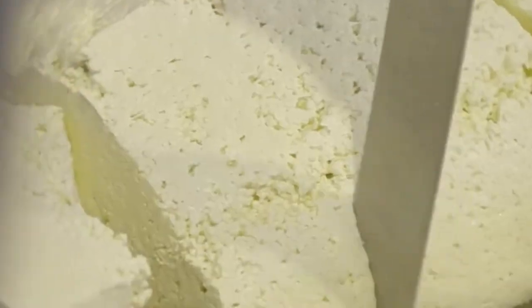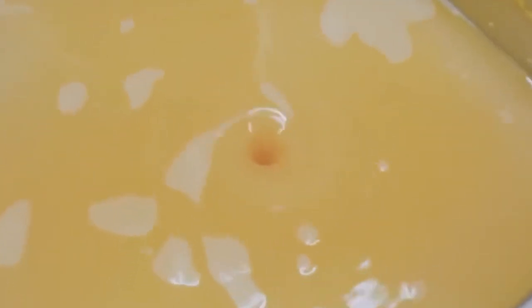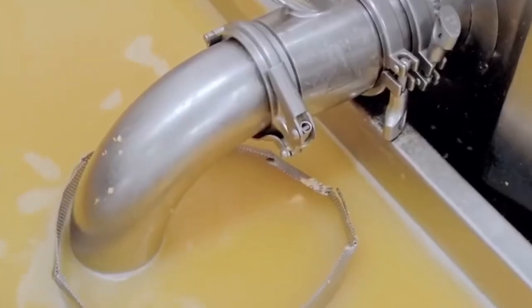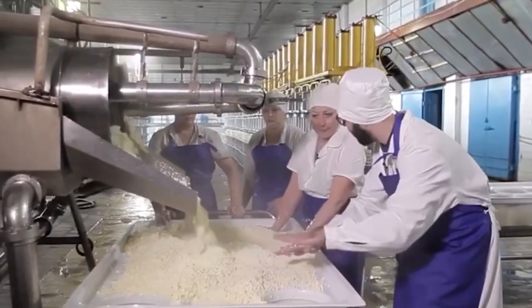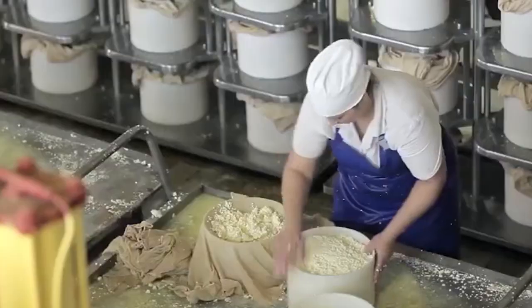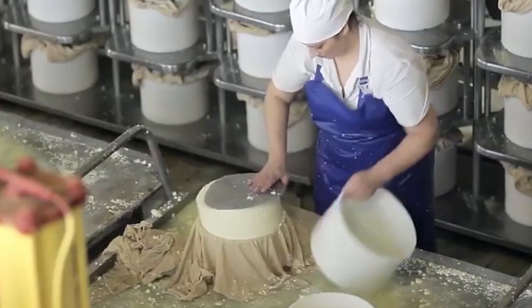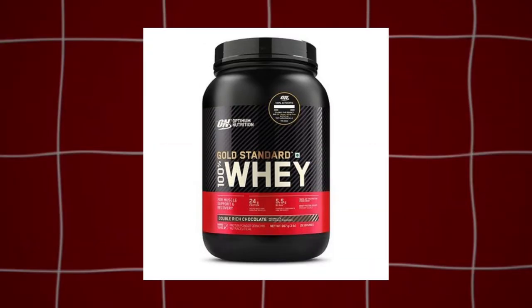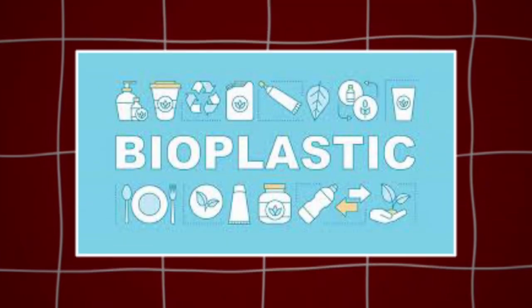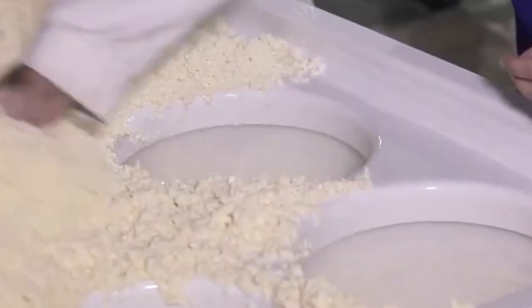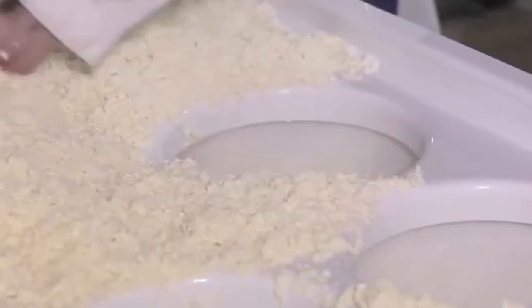Draining the whey. Once the curds are cooked and become firm, the liquid part called whey is drained off. Factories use big tables or special machines to remove the whey easily, but the whey isn't wasted. It's full of protein and other healthy things. People use it to make ricotta cheese, protein powders for fitness drinks, animal feed, and even eco-friendly plastic called bioplastic. So in cheesemaking, nothing goes to waste.